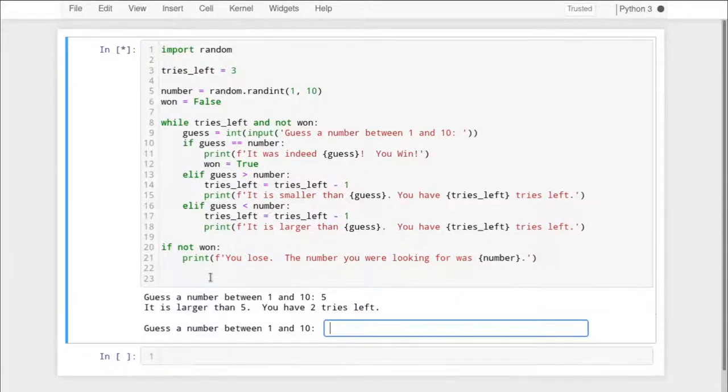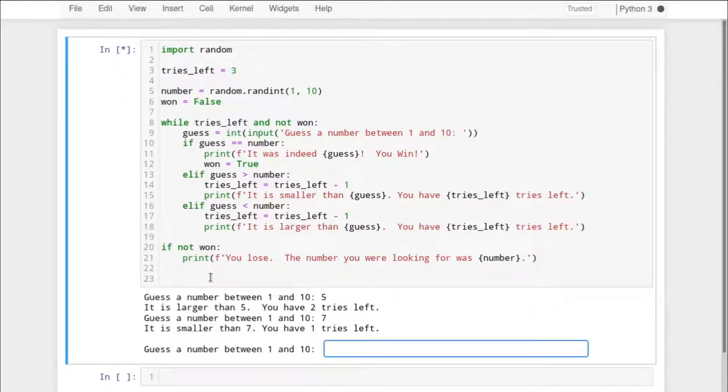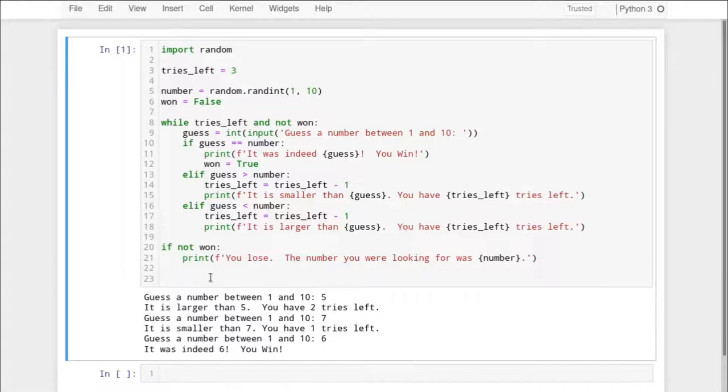And then when the loop breaks, because either we ran out of tries or we won, then we check if we won. If we didn't win, we tell the player that they lost. So let's run that real quick. I guess five. It's larger, so let's go seven. Smaller, six. I win. Okay, that's all good.